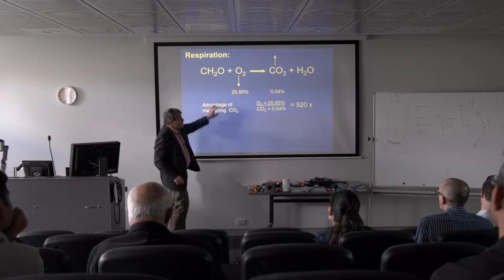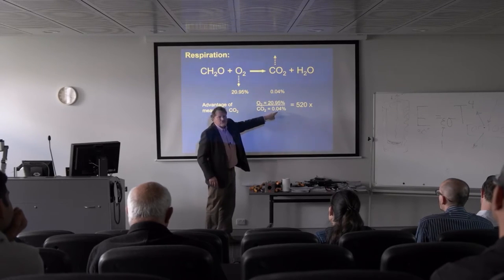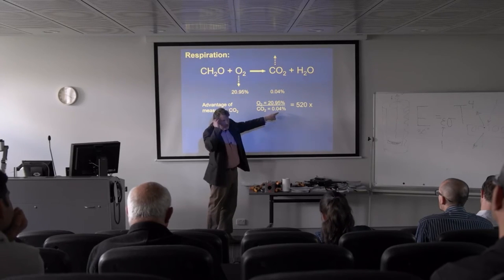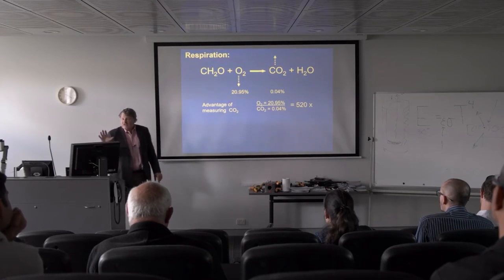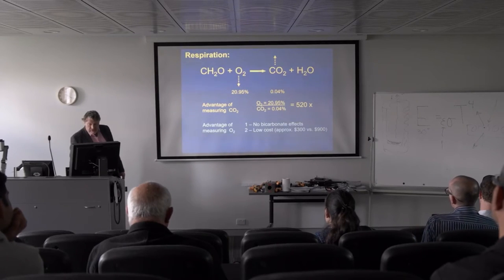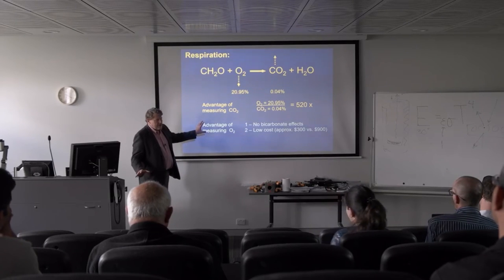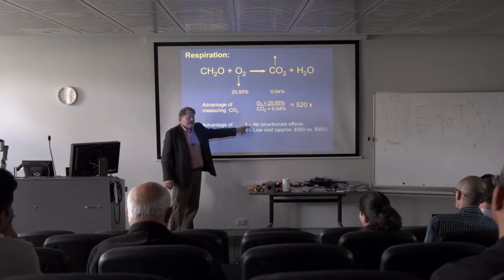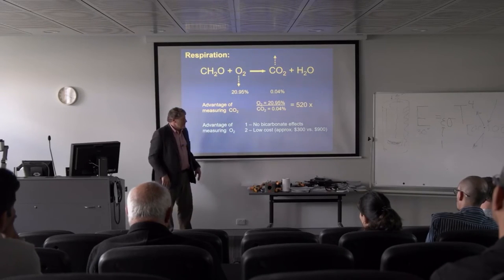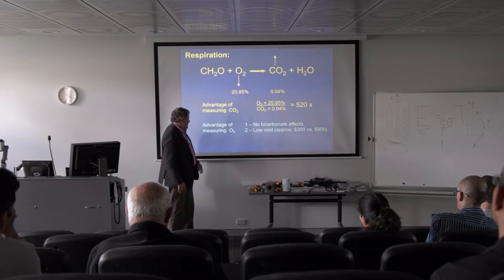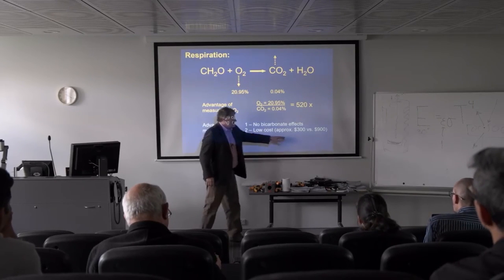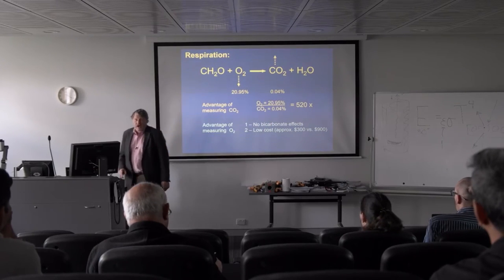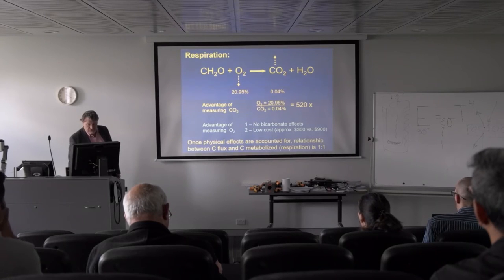This is the advantage of measuring CO2: there's so little in the background — just 0.04% — it's easy to measure a change. Oxygen has a huge background, making it hard to measure tiny changes. CO2 changes are easy to detect. There are also bicarbonate effects — CO2 goes in and out of solution and that's not metabolism, so we have to correct for that. Oxygen sensors are also much lower cost, although we're working with CO2 sensors now that we think will come down to around $300.